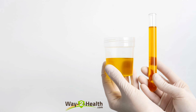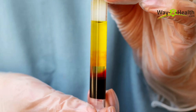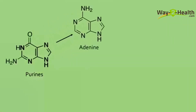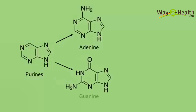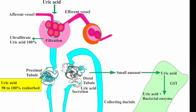Welcome to Way to Health. Today we will discuss high uric acid levels and gout. First, we will discuss what uric acid is. Uric acid is one of the byproducts of purine metabolism. Purines are part of our DNA. Xanthine is broken down by xanthine oxidase to produce uric acid.